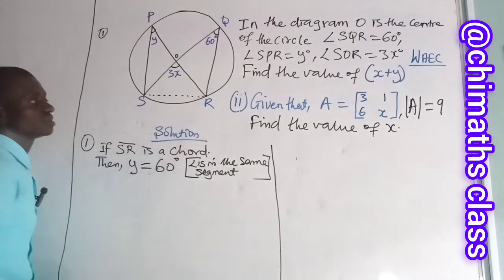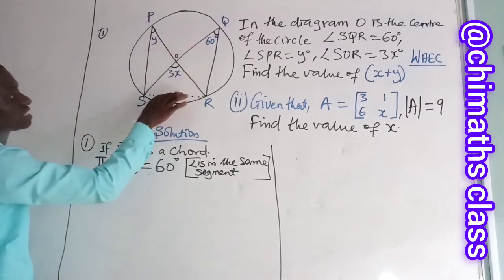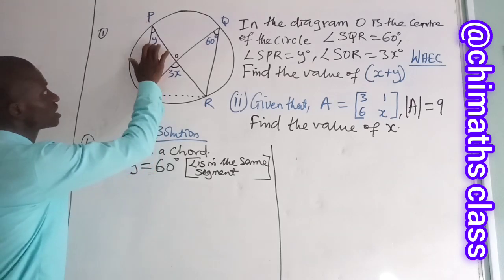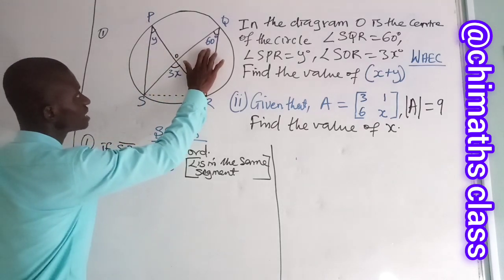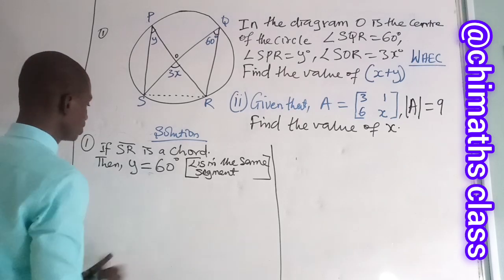So if SR is a chord, this is a segment, this is a major segment, and this is a minor segment. So this angle here at the same circumference, and the angle in a segment at the same circumference, they are 60 degrees. So Y is equals to 60 degrees.